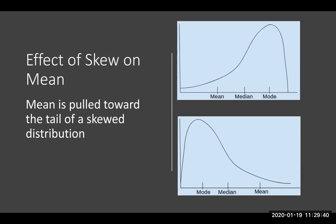In the graphing lecture, I talked about distributions that were skewed. Remember, you can tell whether it's a positive or negative skew if you think about where a skier would go. A skier skiing towards the negative numbers means it's a negative skew, and skiing towards the more positive numbers means it's a positive skew.